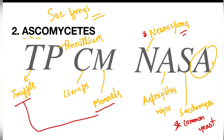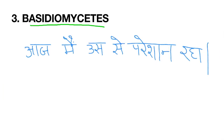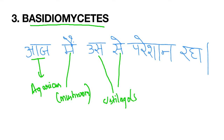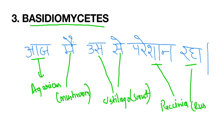Our next class is Basidiomycetes. The trick is 'Aaj Main Usse Pareshan Raha' — someone is disturbing a person and he is very much pareshan today. In this trick, Pareshan Raha represents Paksinia, which means rust. All these examples are important for the NEET perspective.